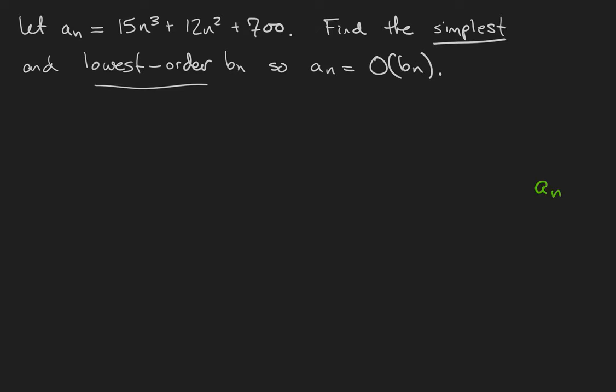If we have a sequence an, it might be big O of sequence bn, but it also might be big O of another sequence bn2 and another sequence bn3 and a bunch of other sequences. It's not useful to say that there's fewer than a million people in a room, but if I say there's fewer than 30 people in a room you get a better idea of how many people are in there.